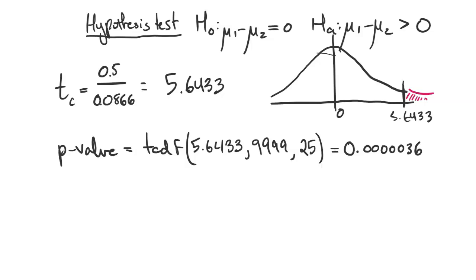We're not surprised at all by how small that is because 5.6 is a very unlikely test statistic. So we interpret that p-value as follows. If the null were true, so in context, what does that mean for the null to be true?